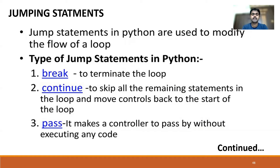Welcome to the channel. Today we're going to discuss break, continue, and pass in Python — we simply call them jumping statements. Jump statements in Python are used to modify the flow of a loop. For example, for i in range(6), the flow goes from zero to five. We can modify, stop, or halt the flow and later continue it. That's why we require jump statements.